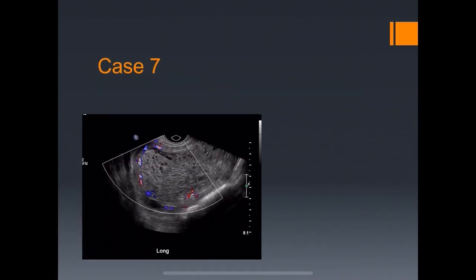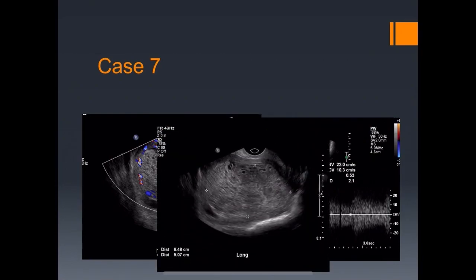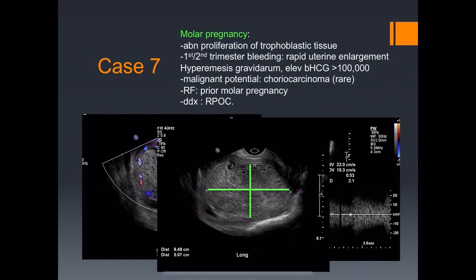Case seven: a 16-year-old with a beta of 110,000. The uterus shows a very thick, very heterogeneous endometrium with high-velocity, low-resistance flow. This turned out to be a molar pregnancy — abnormal proliferation of trophoblastic cells presenting with first-to-second trimester bleeding, rapid uterine enlargement, hyperemesis, and betas usually over 100,000. It has rare malignant potential to choriocarcinoma. The differential is retained products, but that typically occurs after a DNC or delivery.